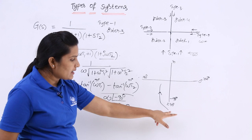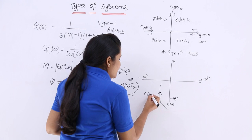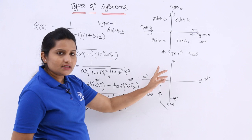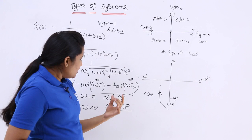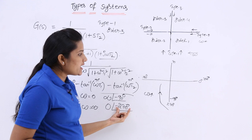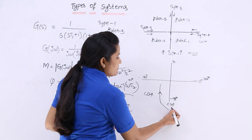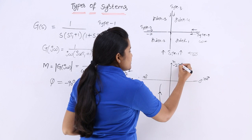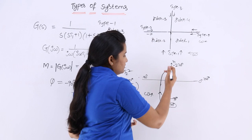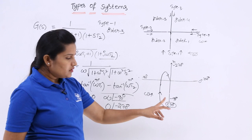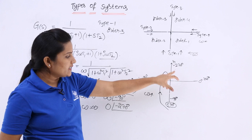As ω increases, the plot keeps moving and will go to the coordinate where order 3 ends. At ω = ∞, the plot must touch the −270° line (which is the +90° line) at magnitude 0 — that means it ends at the origin along the +90° direction. So the direction of the curve goes from the −90° axis toward the +90° axis, ending at zero.